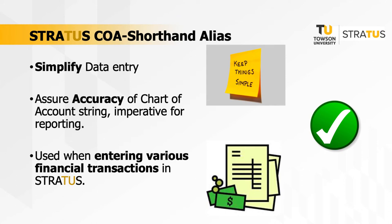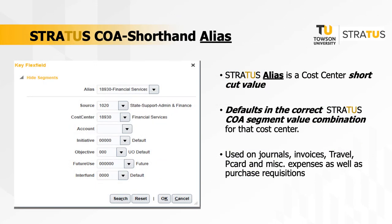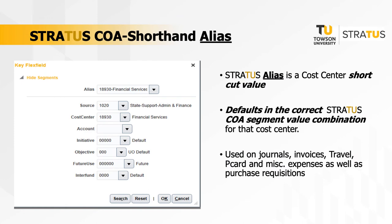Accuracy of the chart of accounts string is imperative to assure accurate financial and budget reporting in Stratus. Shorthand alias is a cost center shortcut value which, upon selection on journals, invoices, travel and p-card expenses, and purchase requisitions, will default into the correct Stratus chart of accounts segment value combination for that cost center.